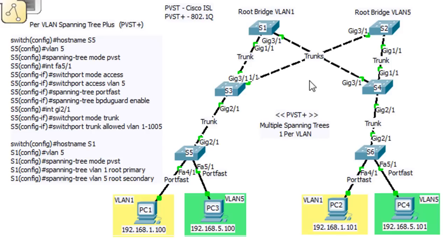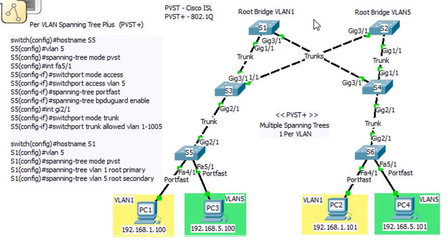What are the benefits of PVST+ and PVST? Well, you can basically run multiple Spanning Trees - you can run a Spanning Tree for each VLAN. For each VLAN, you can have a Spanning Tree root bridge that will handle all the Spanning Tree algorithms and path costs associated with that VLAN. You can even set up a root bridge and then a backup root bridge on the VLANs, which builds in redundancy.